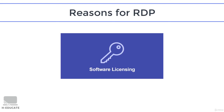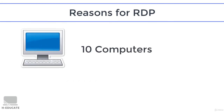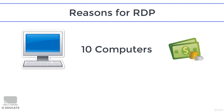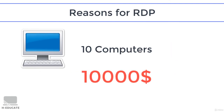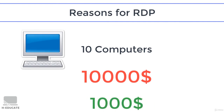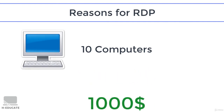Another reason to use RDS is the licensing cost of certain applications installed on multiple client computers. For example, suppose we have 10 computers and want to run expensive software costing $1,000 per machine license. Installing it on all machines would cost $10,000. But using RDS, you install one license on a central server and configure RDS for all clients — the total cost could be only $1,000 instead of $10,000, which is wonderful.